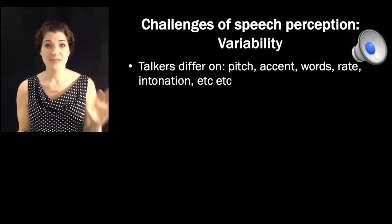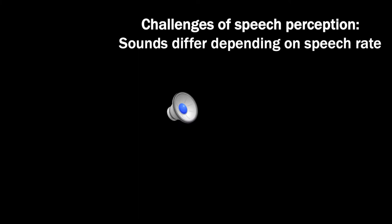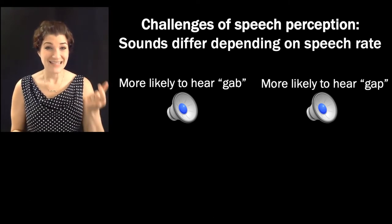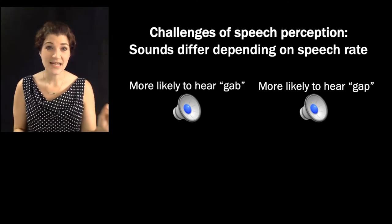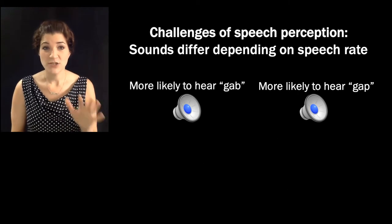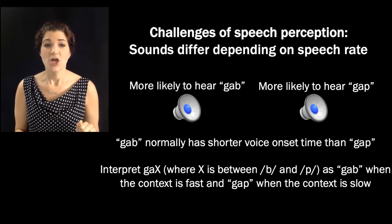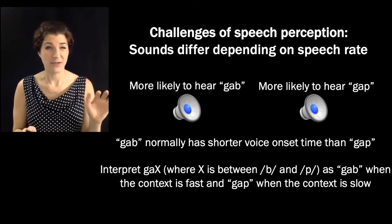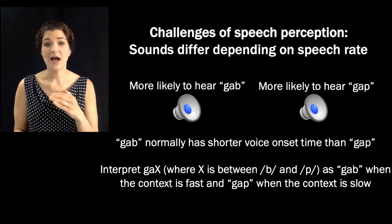So to demonstrate just how much these differences within a talker can affect speech perception, I'm going to play you two different sentences and I want you to listen closely and try and determine what the final word of the sentence is. On this trial, the word is 'gab'. On this trial, the word is 'gab'. In controlled lab settings, participants are more likely to report that first one was 'gab' and the second one was 'gap'. In fact, that was the exact same recording that you heard at the end of speech that was either presented quickly or slowly. It was the same word. But the context that preceded the word affects participants' perception of that final word. So here's why. 'Gab' normally has a shorter voice onset time than 'gap'. This is like the to-do demo that we did earlier. So when I give you a word that is in between 'gap' and 'gab', we interpret that as 'gab' when the preceding context is very fast and we interpret it as 'gap' when the context is slow.